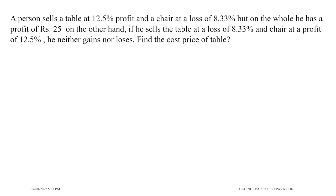A person sells a table at 12.5% profit and a chair at a loss of 8.33%, but on the whole he has a profit of Rs 25. On the other hand, if he sells the table at a loss of 8.33% and a chair at a profit of 12.5%, he neither gains nor loses. Find the cost price of the table.